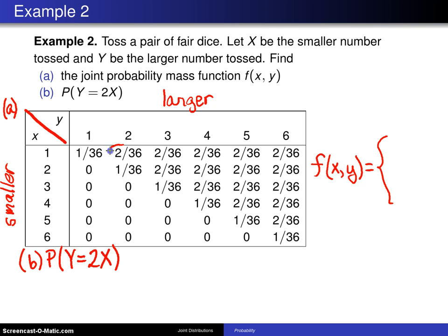Here is one right here. X is equal to 1 and y is double that at 2. Here is another case. X equals 2 and y is double that at 4. And here is the last case. When x equals 3 and y is equal to 6,